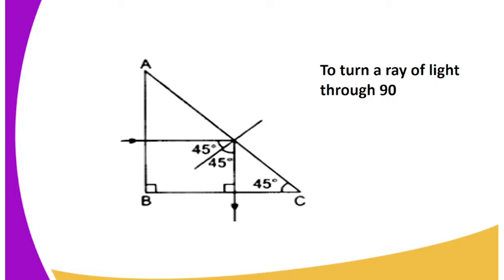There is total internal reflection in prisms. When you turn a ray of light, consider a ray of light incident to the surface of a right angle isosceles prism.